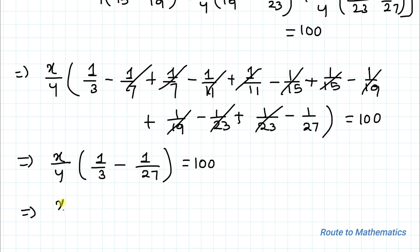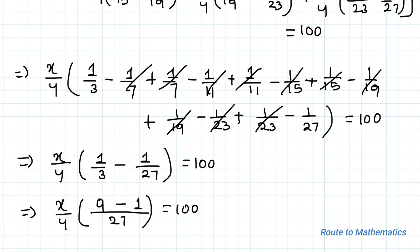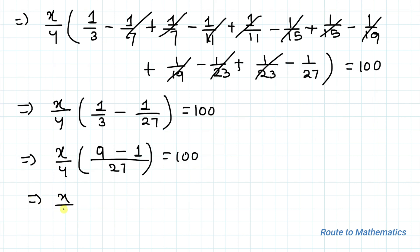Taking LCM, we have 27 in the denominator and in the numerator we have 9 minus 1 equals 8. So this gives x/4 multiplied with 8/27 = 100. Now 4 and 8 cancel by 2, giving x multiplied with 2/27 = 100, and 2 and 100 cancel by 50.